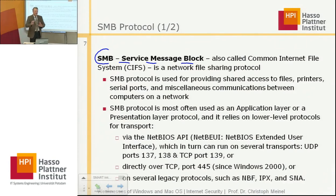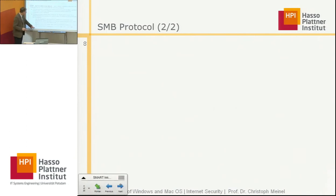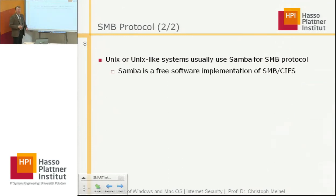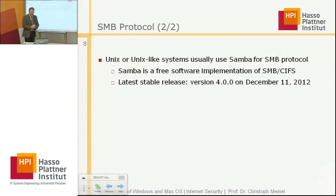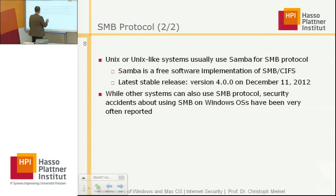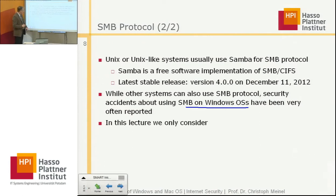There are different constellations where the SMB protocol is used. In Unix or Unix-like systems, they usually use Samba for the SMB protocol. Samba is a free software implementation of SMB, with the latest stable release being version 4.0.0 from December 2012. Security incidents about SMB on Windows operating systems have been very frequently exploited, so the use of SMB in Microsoft Windows is commonly known.